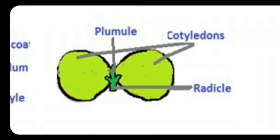Cotyledons store food material and provide nourishment to the developing radicle and plumule — because food is stored inside them. Here you can see two more parts of the seed: radicle and plumule.